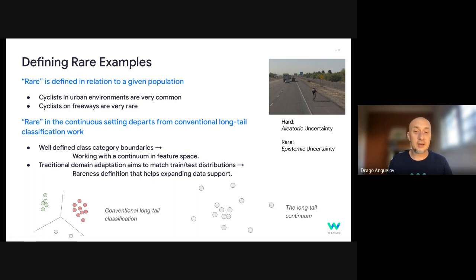And also, unlike conventional works that treat long tail classification as a domain adaptation problem, and domain adaptation is usually the task of matching training and testing distributions better, we are mostly looking at the problem of increasing data support via mining. So we want to have a definition of rareness that mostly helps us fill in this distribution without relying as much on ontology, which is a new challenge.